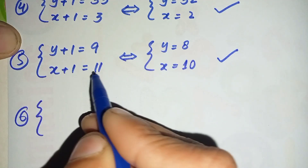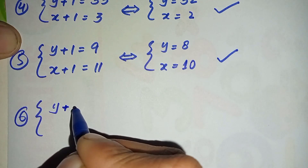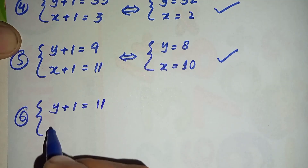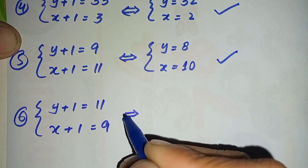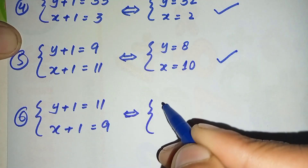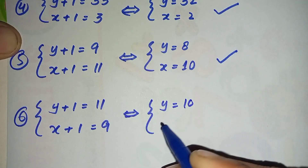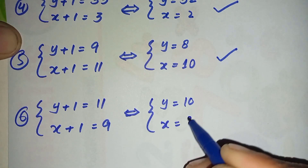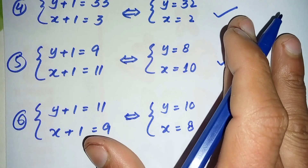For the sixth and last pair, we compare (y + 1) = 11 and (x + 1) = 9. So y = 11 − 1 = 10 and x = 9 − 1 = 8. This is our sixth pair of solutions: (x, y) = (8, 10).